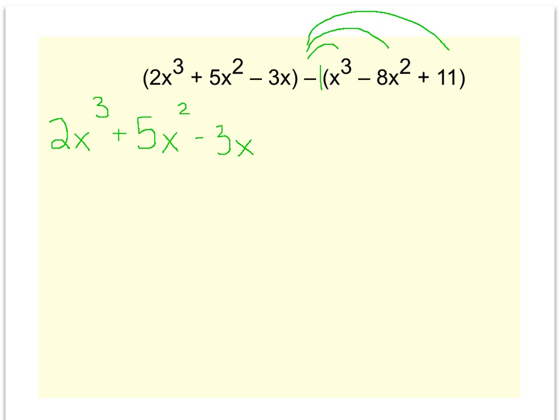Then let's distribute that negative one. Negative one times x³ is negative x³. Negative one times negative 8x² is plus 8x². And negative one times 11 is minus 11.